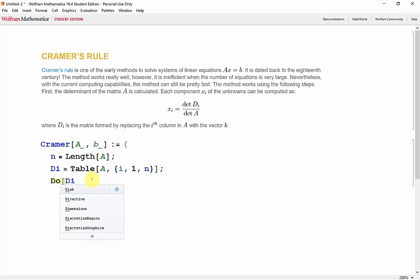So we take Di, we want its i-th matrix, all of its rows, and its i-th column. And we want to set that equal to B.